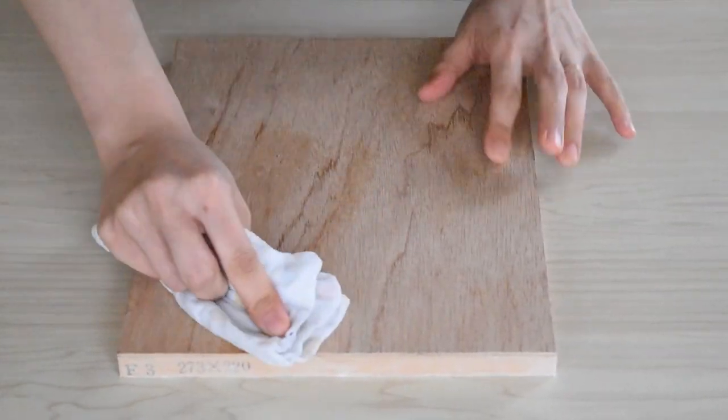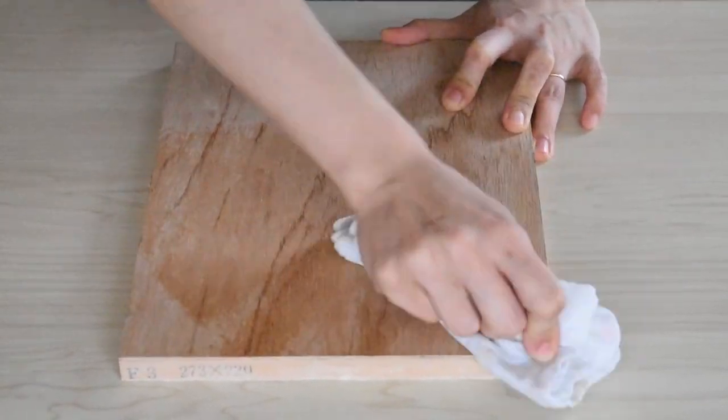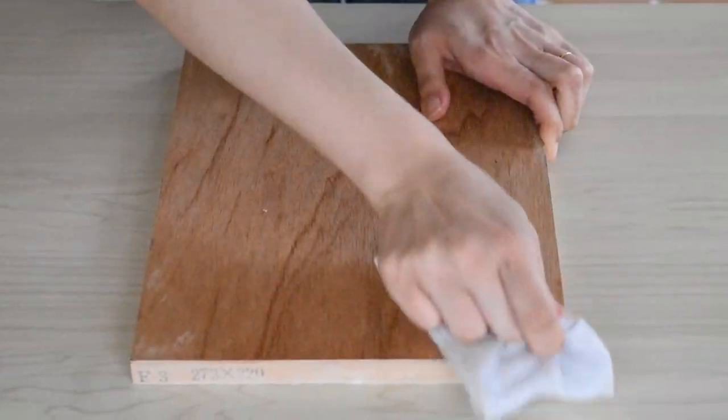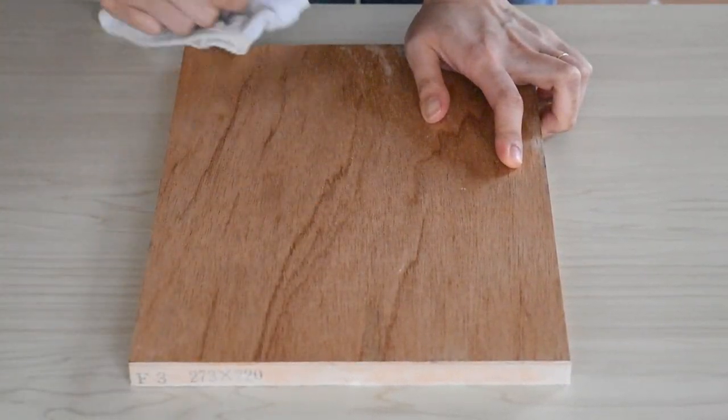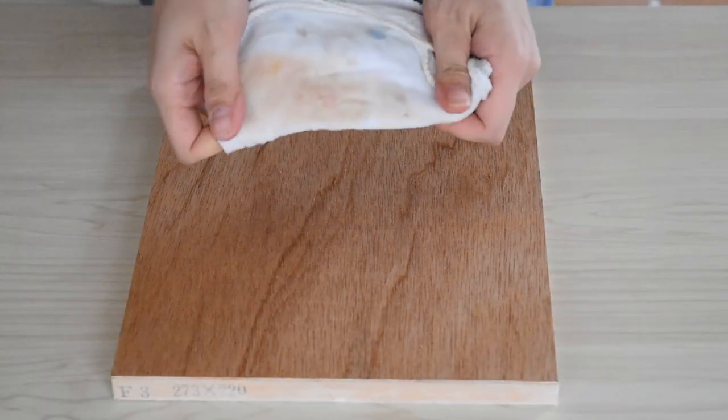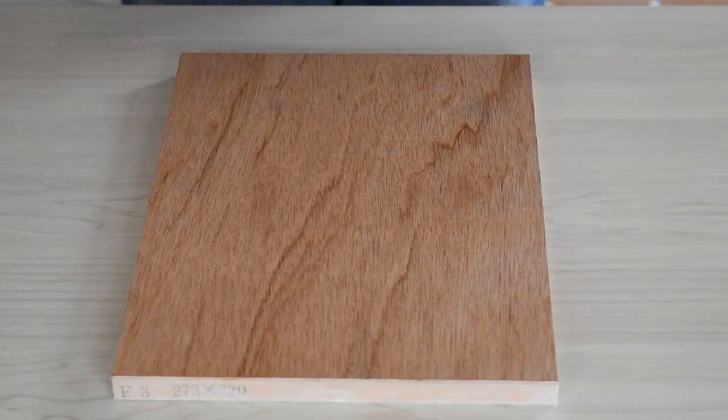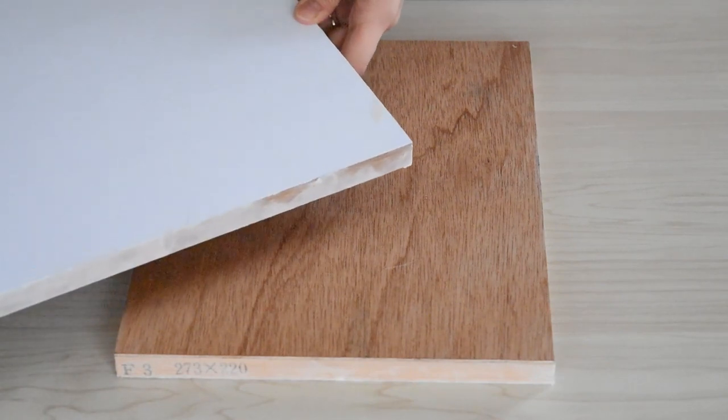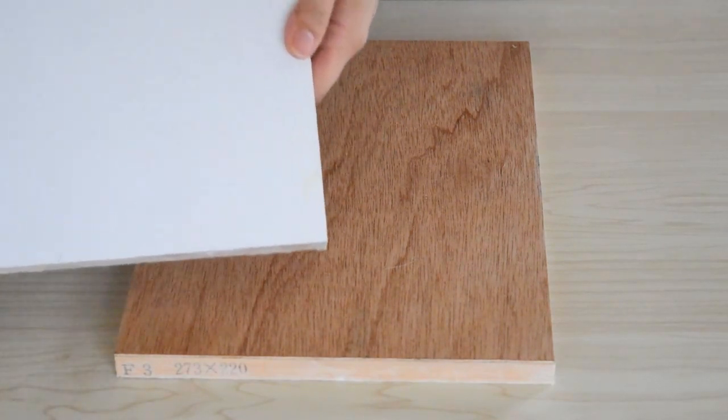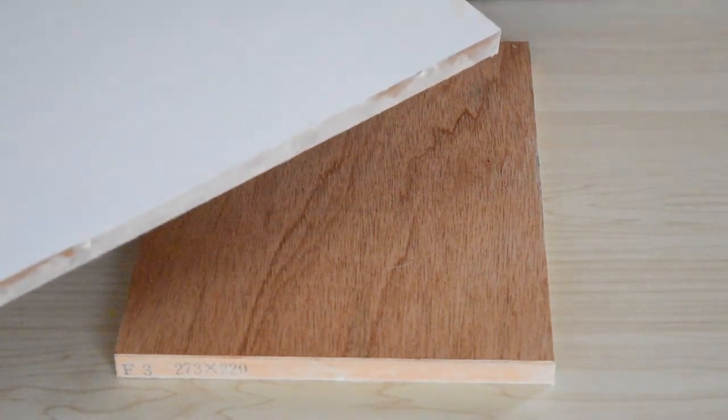Wipe the surface of the wooden panel with a wet towel to remove resin and dust. I usually coat the surface with gesso or paper to prevent resin. But if you are a beginner, you can skip that.